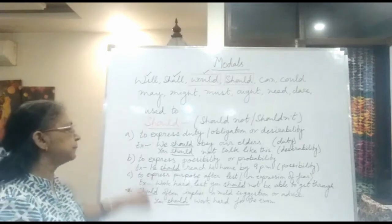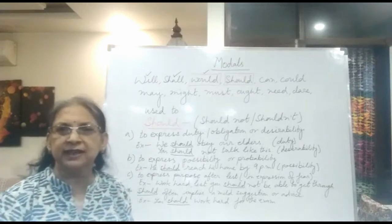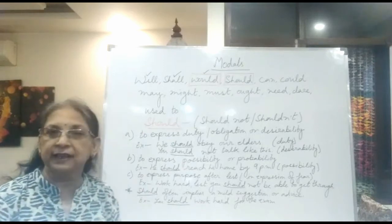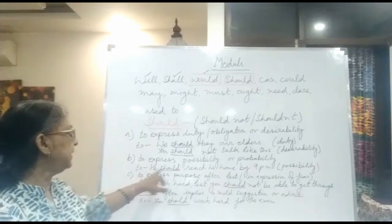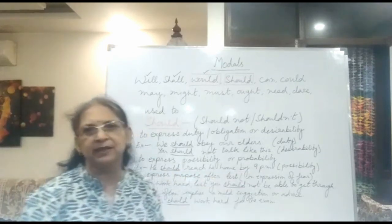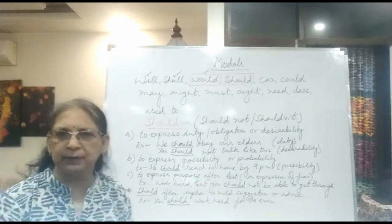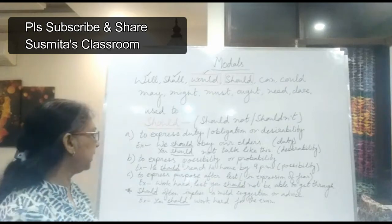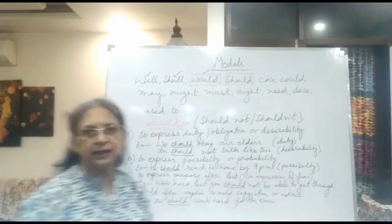The next use is to express possibility or probability. That means chances are high — this is possibility. Or probability means maybe there are chances. For example: he should reach his home by 9 PM. Someone has left from here and I can say most probably he should reach home by 9 PM — you are expressing possibility.